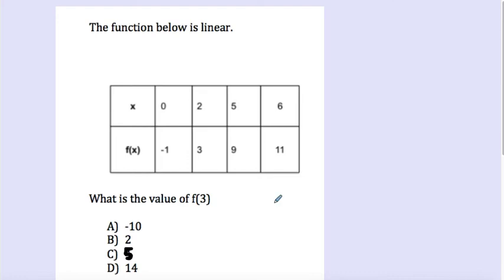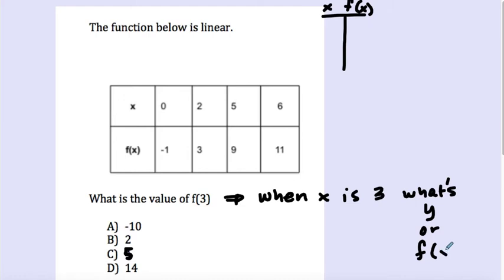Let's look at this one. This one's a little bit different than the other two that we've just worked with. So it says the function below is linear, and it gave us a function table, but it gave it to us horizontally instead of vertically. If it makes it more comfortable for you, you can certainly write it vertically. And it says, what is the value of f at 3? So it wants to know when x is 3, what's y? That's what this question is asking. When x is 3, what's y? Or f of x? Well, there's a couple ways you could do this. One way would be to actually write an equation for the function.